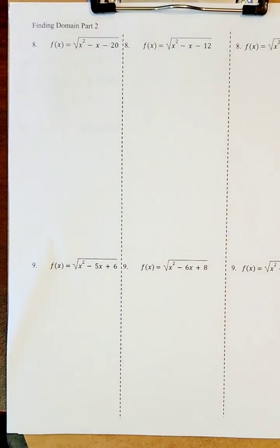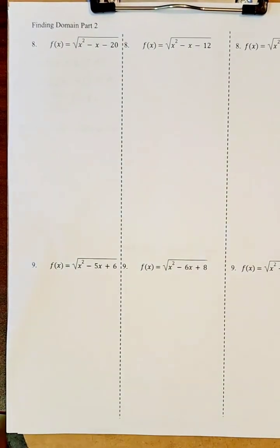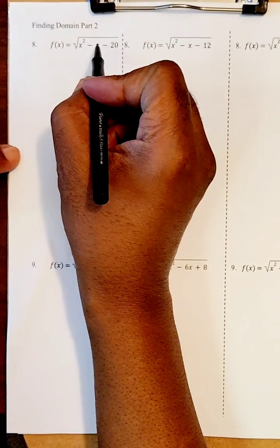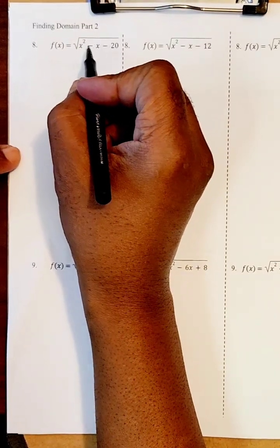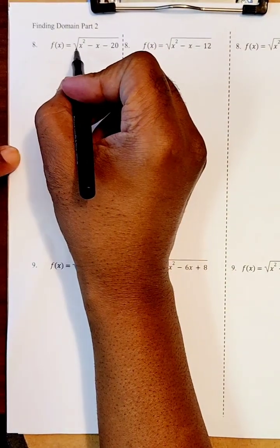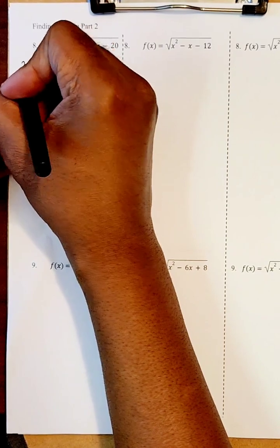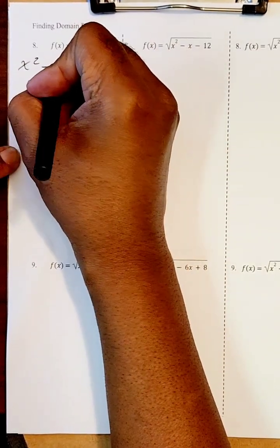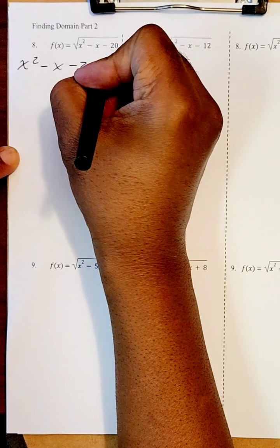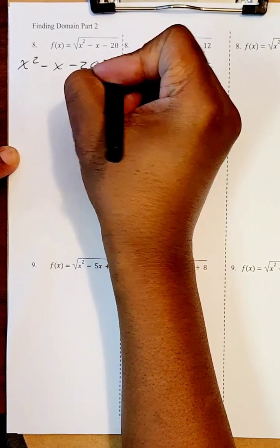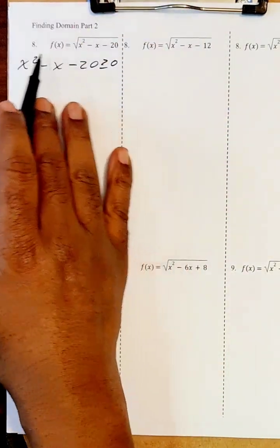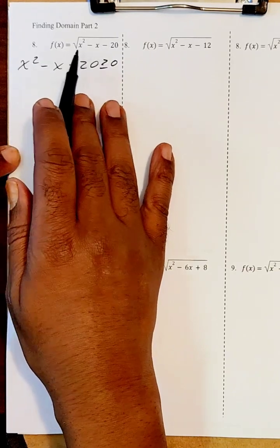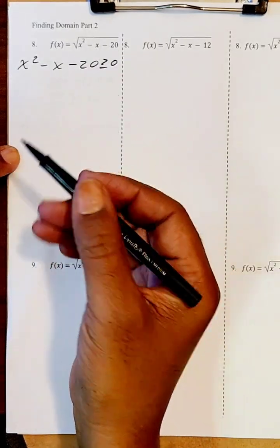We'll be finding the domains of square root functions. Square root functions can only take zero or positive numbers, so you take the expression from inside the square root and set it greater than or equal to zero. Being greater than or equal to zero means those numbers actually belong in the domain.